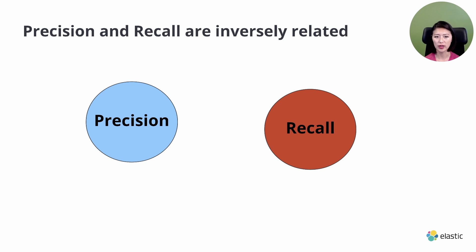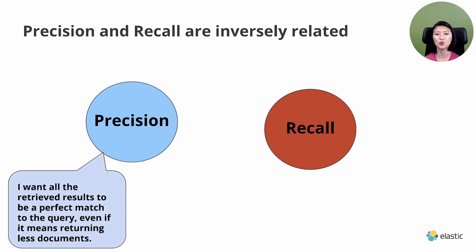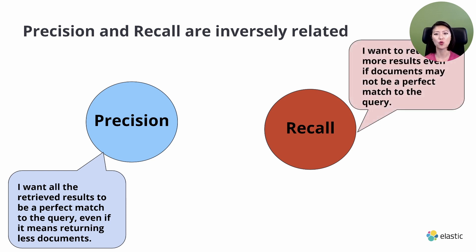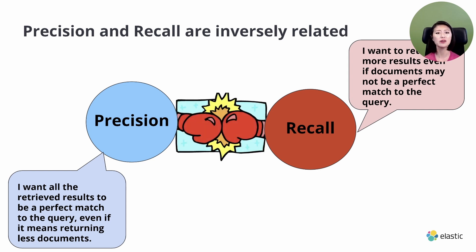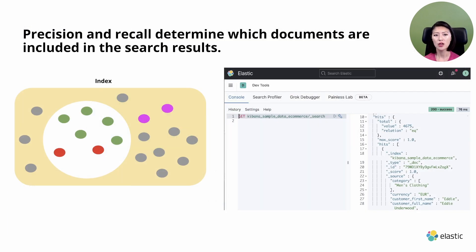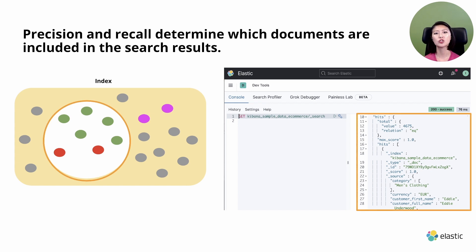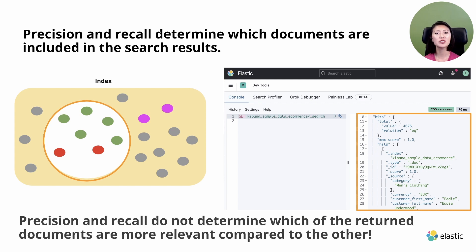Precision and recall are inversely related. Precision wants all retrieved results to be a perfect match to the query, even if it means returning fewer documents. Whereas recall focuses more on quantity — it wants to retrieve more results even if documents may not be a perfect match. The dilemma is that we want to present really relevant items but also retrieve as many results as possible. These two factors are at odds: improving precision might cause a decline in recall and vice versa. Precision and recall determine which documents are included in search results, but they do not determine which returned documents are more relevant than others — that is determined by ranking.